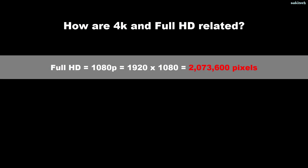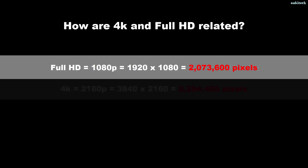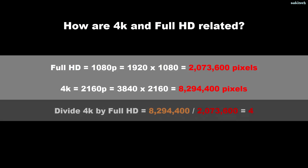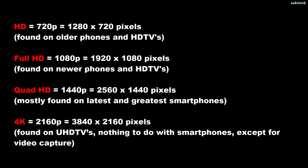Finally, there's an interesting relation between 4K and Full HD. 4K is supposed to be four times Full HD in terms of pixel count. Full HD at 1080p is 1920 by 1080, which gives 2,073,600 pixels. 4K at 3840 by 2160 gives 8,294,400 pixels. Divide the two and you get exactly four, so it all makes sense.